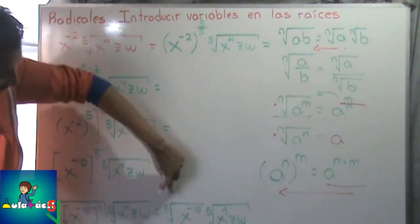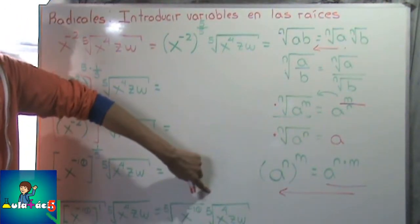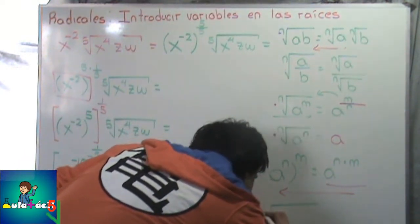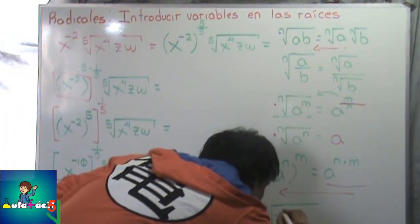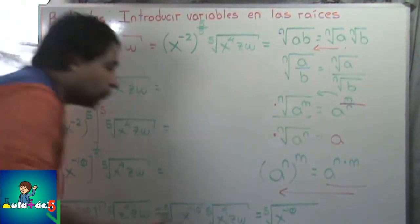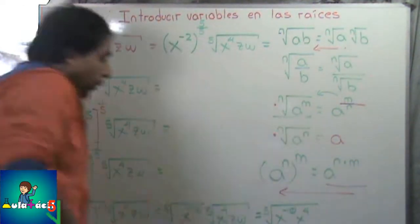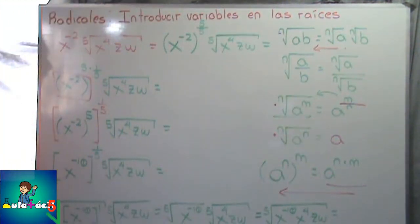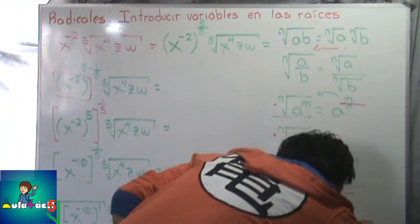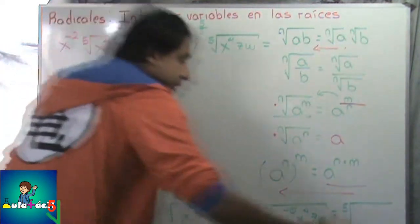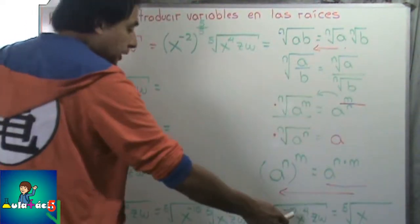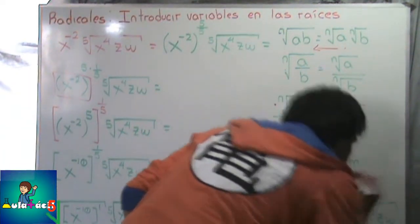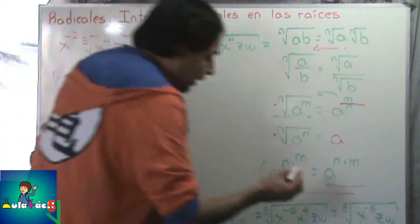Como ya tenemos dos raíces que se están multiplicando del mismo índice, las juntamos en una sola: raíz quinta de X a la menos 10 por X a la 4 por Z W. Simplificamos: X por X la escribimos una vez sumando los exponentes — menos 10 más 4 me da menos 6. Las variables que no se multiplican las dejamos tal cual. Raíz quinta de X a la menos 6 Z W. Ya tenemos el resultado.